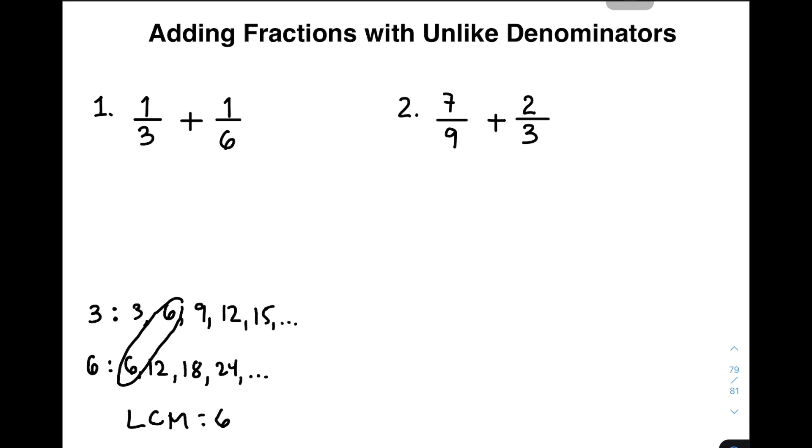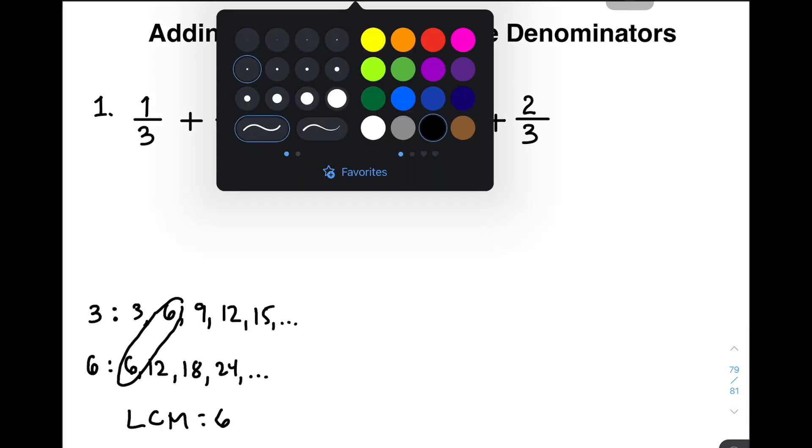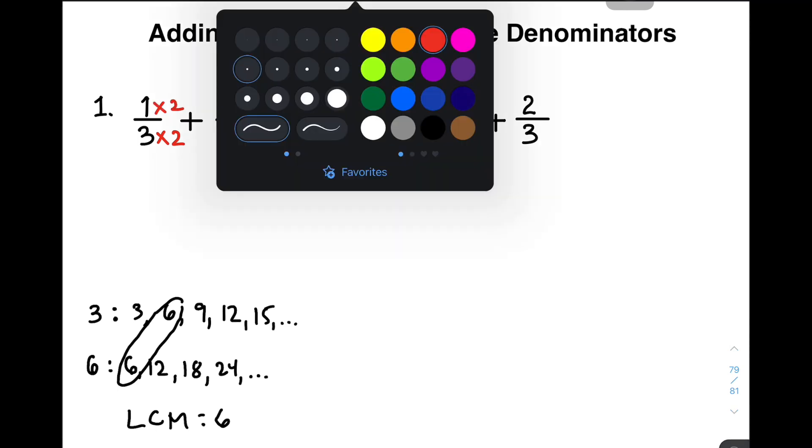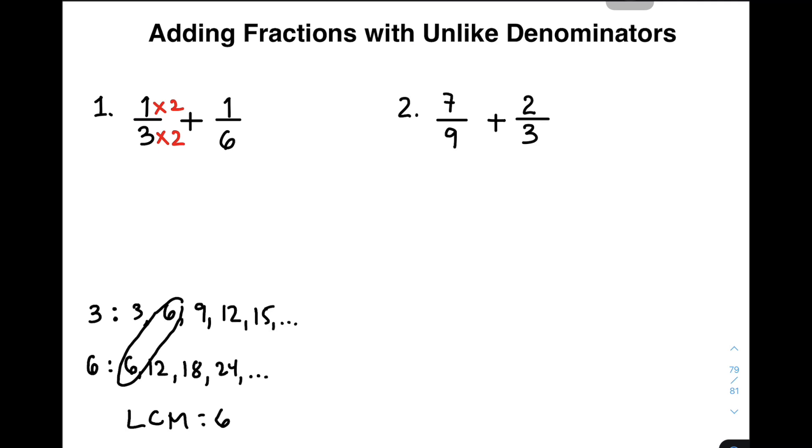Now, our target here, since we already identified the least common multiple, we need to think: do we need to multiply a number to make 6 a 6? No, it doesn't. All we need to do is transform this denominator into 6 by multiplying a certain number. For example, I will multiply this by 2, both the denominator and numerator by 2.